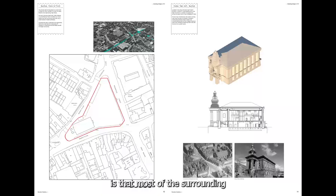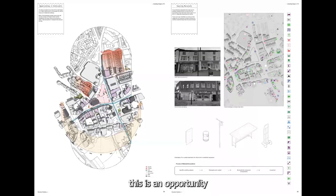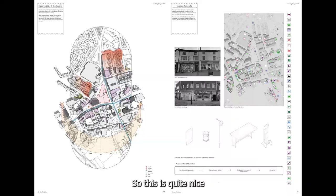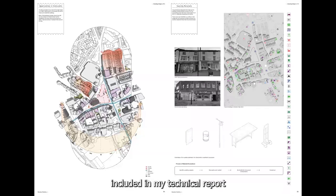An interesting thing is that most of the surrounding buildings are actually listed, and so is the town hall. You can see the town hall on the right — it's a lot of classical Baroque style architecture. That's the simple site plan and context. I also created an opportunities and constraints diagram to identify problems or opportunities within the site. I then found a map showing the different types of stores within the surrounding area — quite nice because I could try to identify what kinds of objects I was able to retrieve from the site itself. It's almost using the surrounding high street to create a new kind of architecture, keeping that level of history and delicacy. This was also included in my technical report.